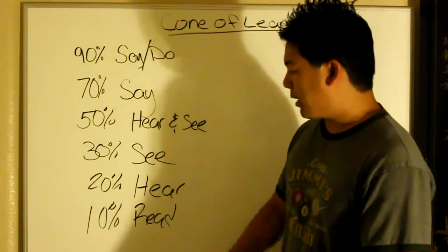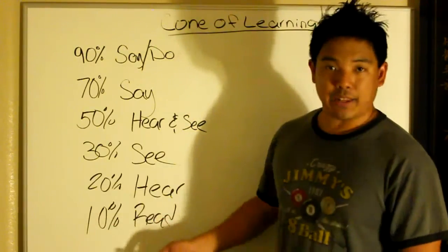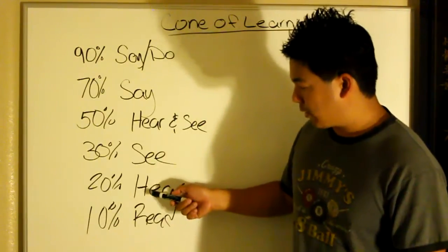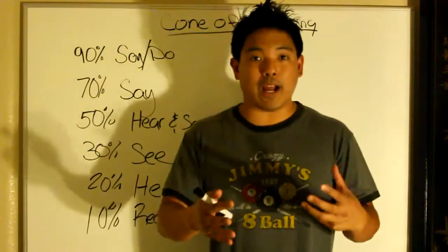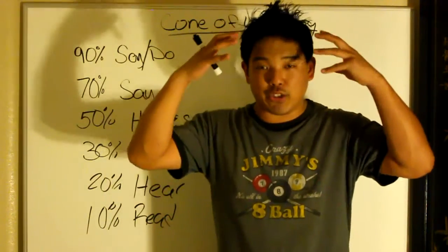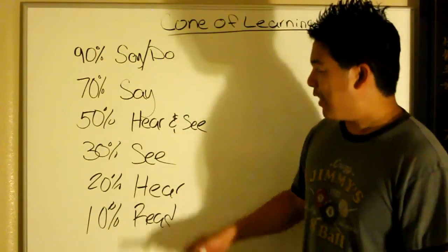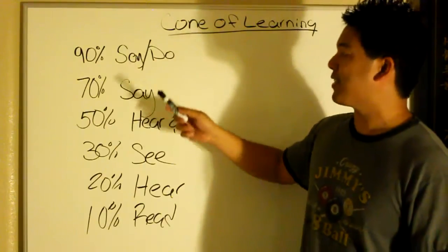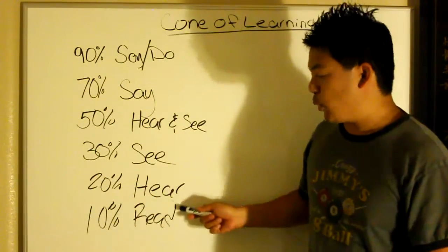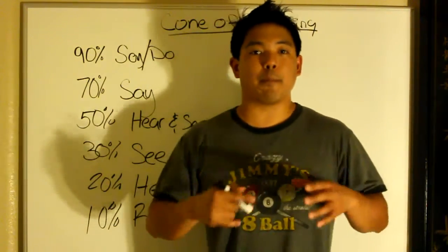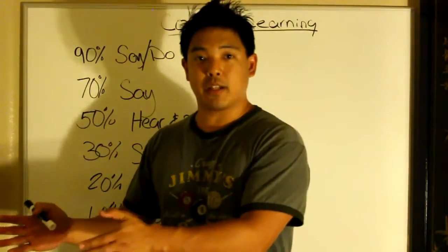Why is that important? When you're only reading a book, you have the least percentage of retaining what you read. But if you read it and also hear it — for example, if you read aloud so you hear your own voice — it sends a different message into your mind and comprehends in a different way. You'll remember 20% plus 10%, so 30%. The more you combine everything — saying it, coaching someone, hearing it, reading it — the better chance you have after two weeks of remembering and implementing what you learn.